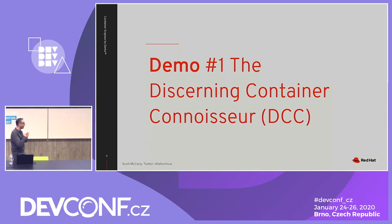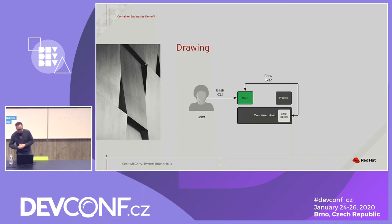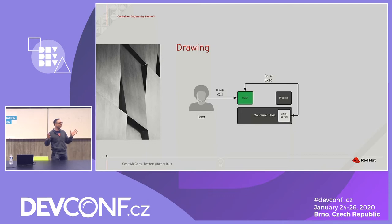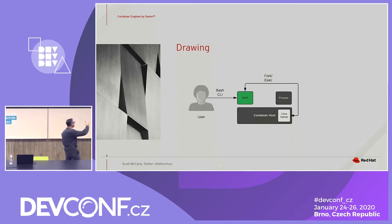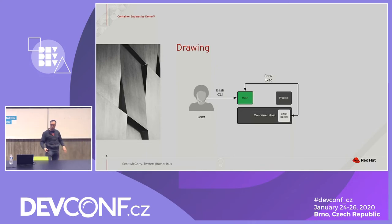Let's get right into the first demo — this is the one where I trick you first. Does everyone understand basic processes in Linux? In a nutshell: there's a user interface which is just a CLI. The user types a command in Bash. Bash does a fork or exec depending on what command you're running, and then it talks to the Linux kernel to fire off another process. This is very simple, basic Unix/Linux 101.